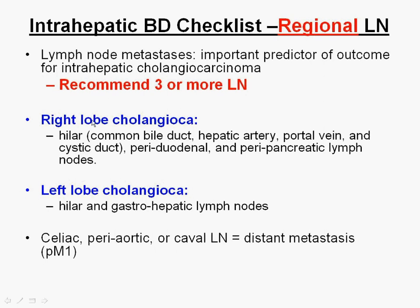When you have a right-lobe cholangiocarcinoma, what constitutes regional lymph nodes is slightly different from what constitutes regional lymph nodes on the left. For instance, in the left lobe you can have gastroepathetic lymph nodes and it will still be N1. But if you have extension into the same lymph nodes from the right lobe, it is no longer N1 — that is M1. Just by knowing which side the tumor is on, you see that lymph node invasion outside of the recognized primary lobe constitutes PM1.